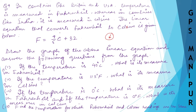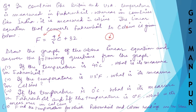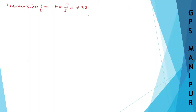We can convert from one unit to another. So we need to draw the graph of the linear equation. The tabulation is for F = 9/5·C + 32. Now I need to draw the table for this equation.